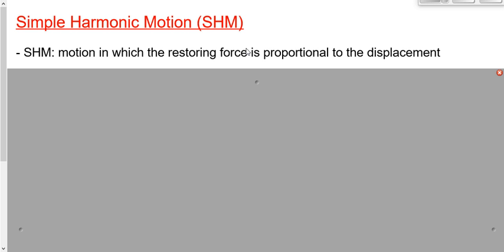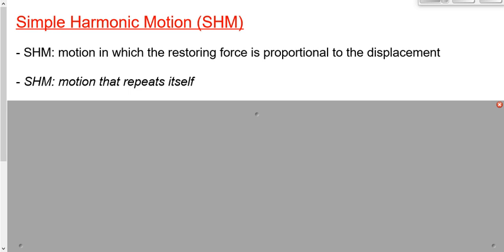Why do we call it simple harmonic motion? Because when I let that object go — if I let go of that elastic — it starts vibrating back and forth. It's motion that results in motion that repeats itself. When I do that to an elastic, the vibration dies out very quickly, but in other cases of simple harmonic motion, the vibration might last longer. We think of simple harmonic motion as motion that repeats itself, which results from the definition: the restoring force getting bigger as displacement gets bigger.